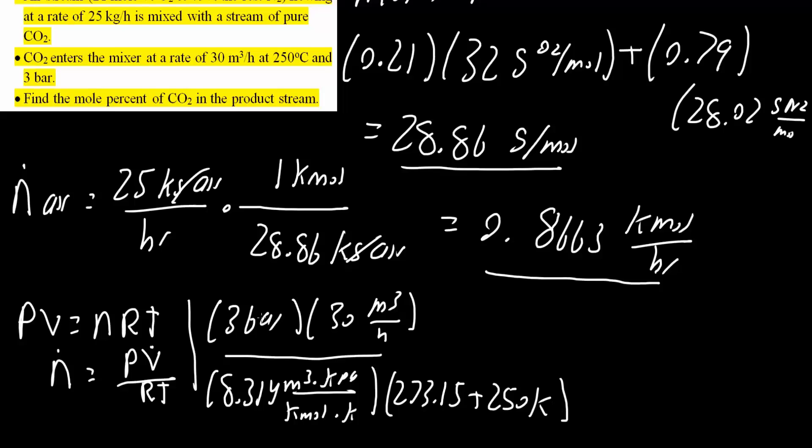This is bar, but we have KPA for our constant. So we need to change bar into KPA. The conversion is 1 bar equals 100 KPA. Now let's check our units. Bar cancels, we have KPA meter cubed which would cancel. We have K which cancels. This would give us kilomoles over hour, because this is essentially 1 over hour, and this is essentially 1 over kilomoles. When we use a calculator for this, we get 2.069 kilomoles of CO2 per hour.